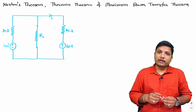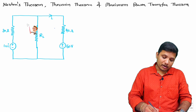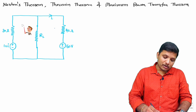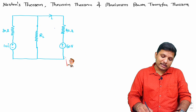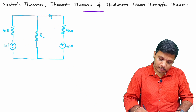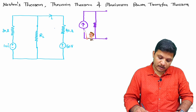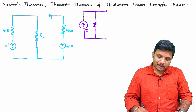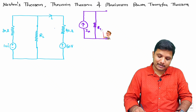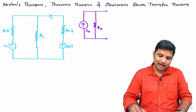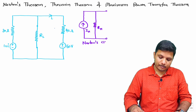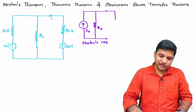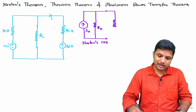When we talk about Norton's theorem, it gives you an equivalent current source in parallel with an equivalent resistance of the network. The current source value is I_n and the equivalent resistance value is R_n. This forms the Norton's equivalent circuit, where we connect load resistance R_L.